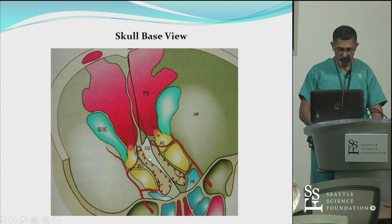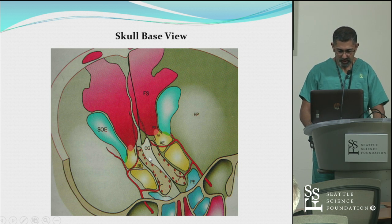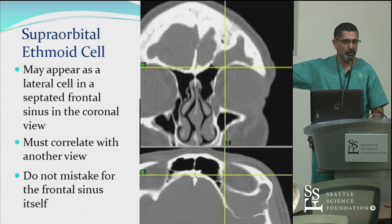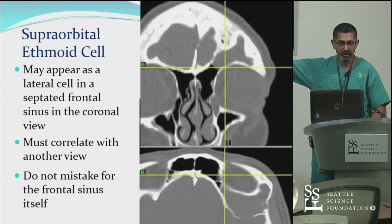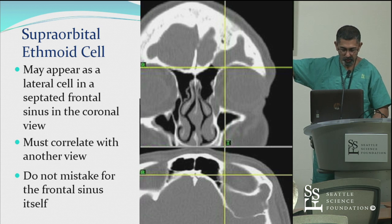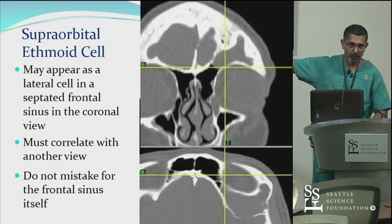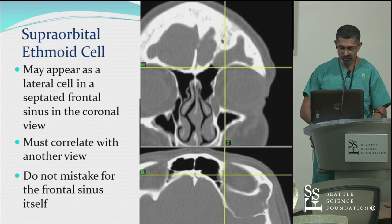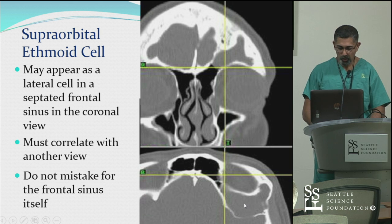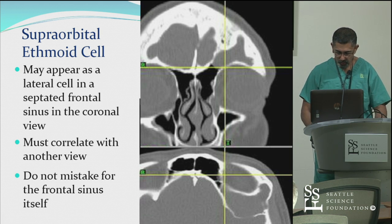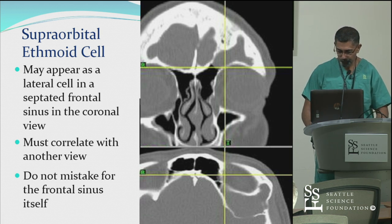The anterior ethmoid artery is at the posterior aspect of that suprabullar recess and curves more anteriorly as it gets more medial. This is an example of that supraorbital ethmoid air cell — if you just looked at the coronal image, you wouldn't necessarily know whether that's a loculation in a lateral compartment of the frontal, but clearly on the axial image you can see just how posterior and lateral it is and where it has expanded into the orbital plate of the frontal bone.